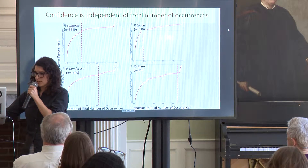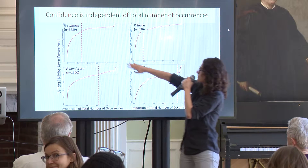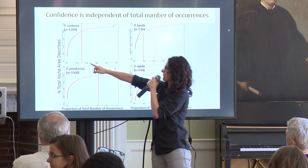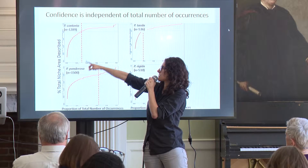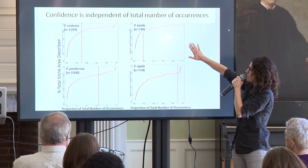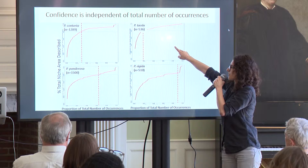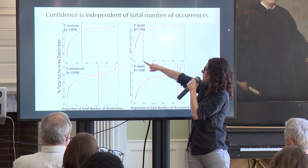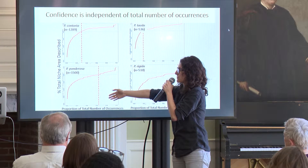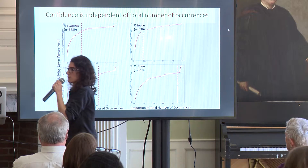But this threshold is not the same for every single species. Here you have Pinus contorta — it also has a thousand records similar to Pinus ponderosa, but a very different point where the number of occurrences meets that threshold. And here you have two species, also pine trees, that have only 500 occurrences, and yet one of them performs a lot better — you only need 20% of the data to get a good prediction of the species' niche, compared to Pinus ponderosa where you need a lot more. So confidence is species-specific and independent of total number of occurrences.